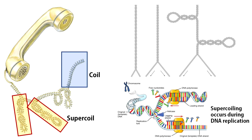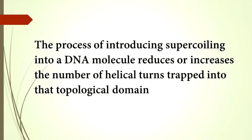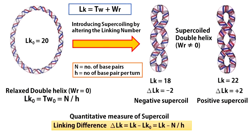This coiling and tangling of the rope or DNA is the process of supercoiling. The process of introducing supercoiling into a DNA molecule reduces or increases the number of helical turns strapped into that topological domain. This further changes the linking number of the closed circular DNA. In other words, a change in supercoiling in a given topological domain is accompanied by a change in the linking number.